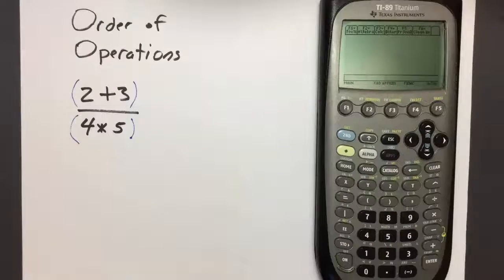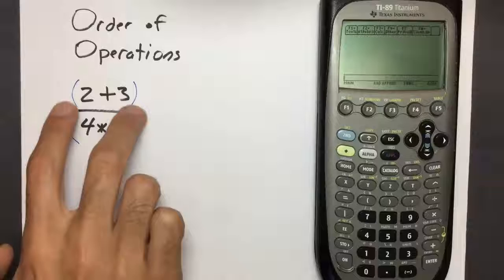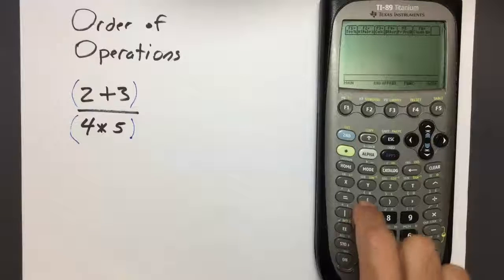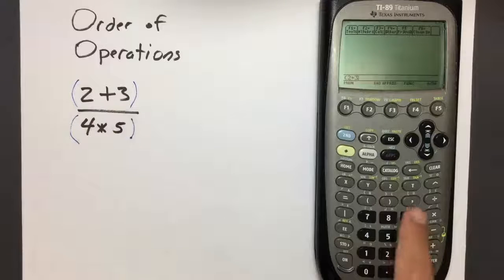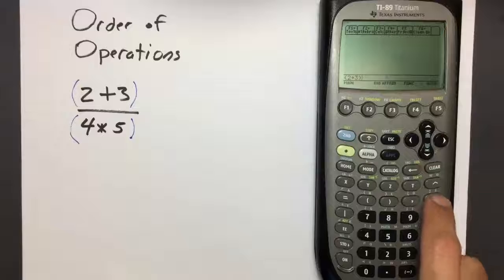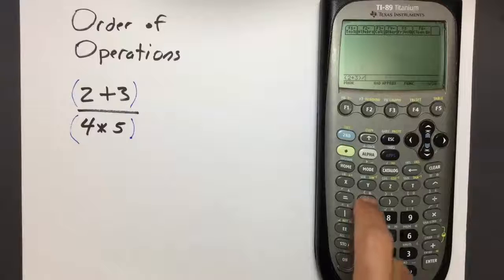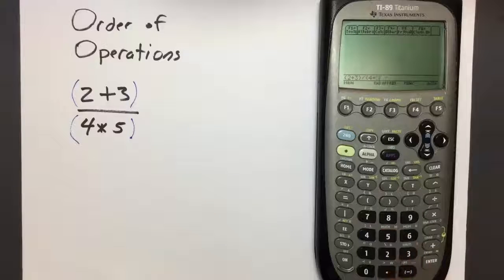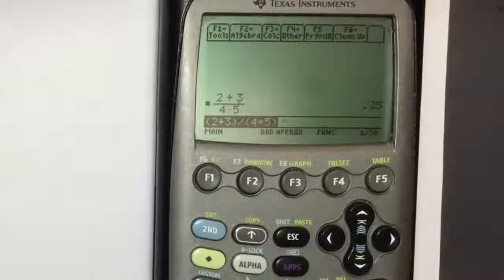For those of you using the TI-89 Titanium, as indicated by this sign, once again we're going to need to use parentheses around both the numerator and the denominator, because the TI-89 doesn't have a very convenient way for us to enter fractions. So we'll begin with open parentheses here, enter the 2 plus 3, close the parentheses, and now press the division key. This specifies that the numerator is completed, and now we begin the denominator. We open another parentheses to show the denominator has started. We say 4 times 5, and close the parentheses. Then we press enter. And our answer is 0.25.